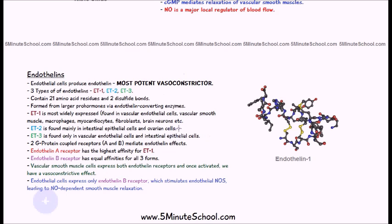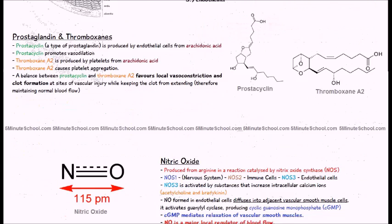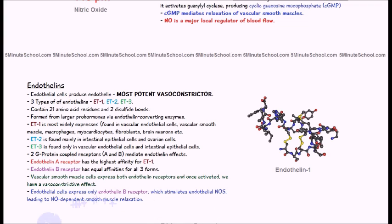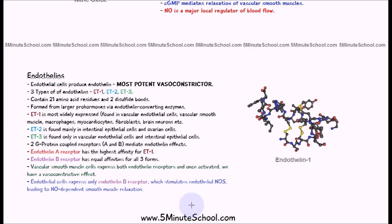The vasoconstriction mechanism involves two G protein-coupled receptors: endothelin A (ETA) and endothelin B (ETB). ETA has the highest affinity for ET1, while ETB has equal affinity for all three endothelins. Vascular smooth muscle cells express both ETA and ETB receptors, producing a vasoconstrictive effect when activated. However, endothelial cells express only ETB receptors, which stimulate endothelial nitric oxide synthase, leading to nitric oxide-dependent smooth muscle relaxation and vasodilation, thereby affecting the direction of blood flow.